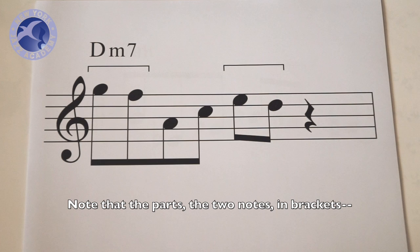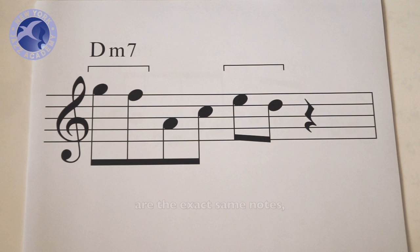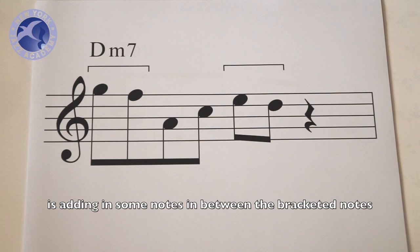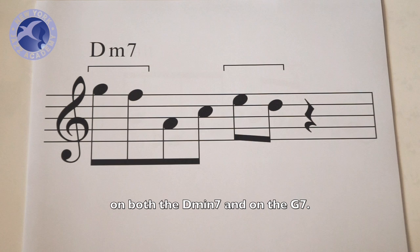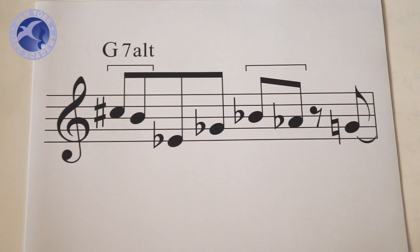We're going to flesh out this example. Note that the parts, the two notes in brackets here and here, are the exact same notes. So really all we're doing in this next example is adding in some notes in between the bracketed notes on both the D minor 7 and on the G7. Let's give it a listen.